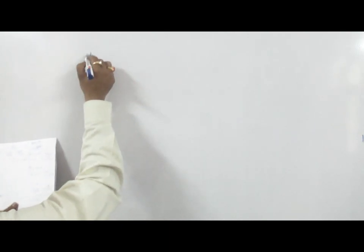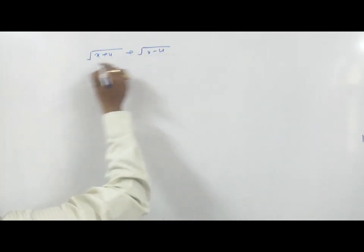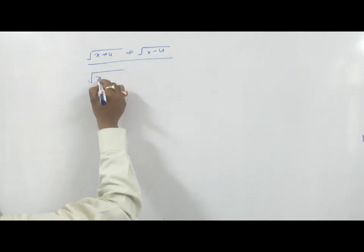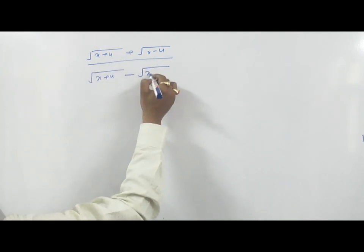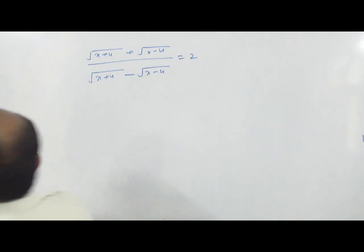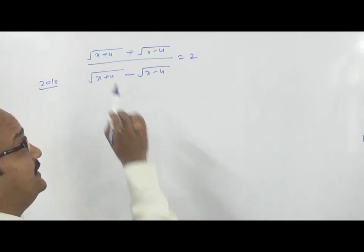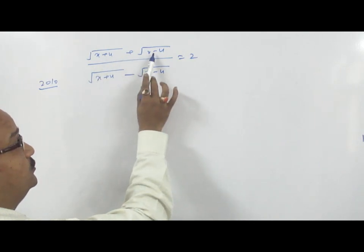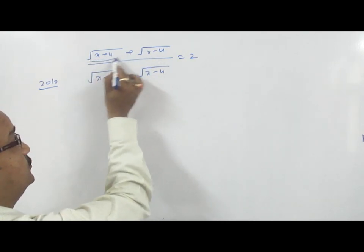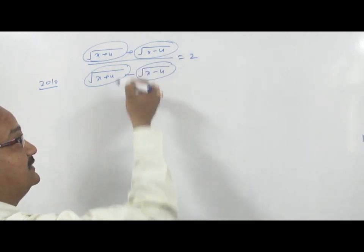A good question was asked in the 2010 examination of SSC. It is: root of X plus 4, plus root of X minus 4, upon root of X plus 4 minus root of X minus 4, is equal to 2. As we can see, root X plus 4 and root X minus 4 — these two values are the same with plus and minus sign.